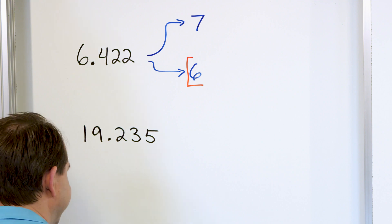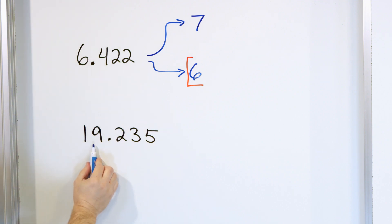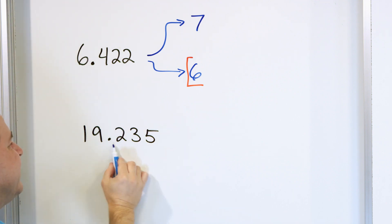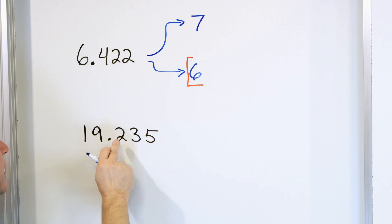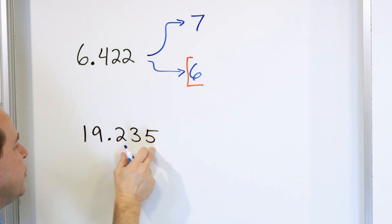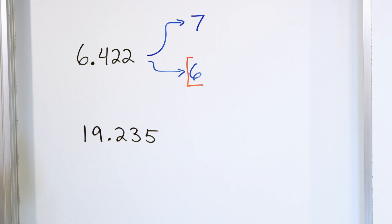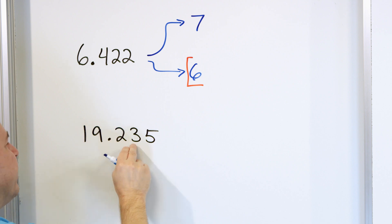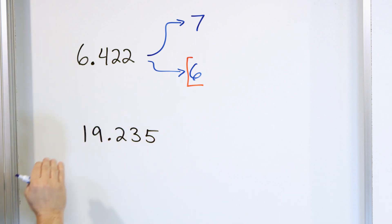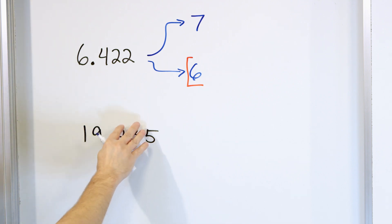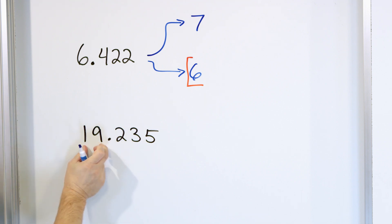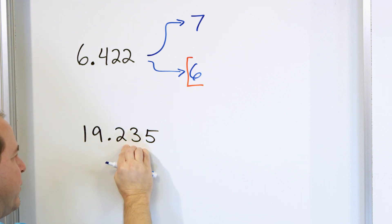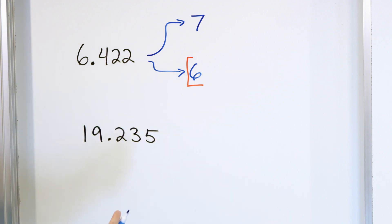Again, we have a choice. This is 19 apples, and the decimal tells us how close we are to 20 apples. If you reached 0.999, you'd be really close to 20 apples. If you had 0.000, you'd be much closer to 19. The smaller these decimal numbers, the closer you are to 19; the larger, the closer you are to 20.